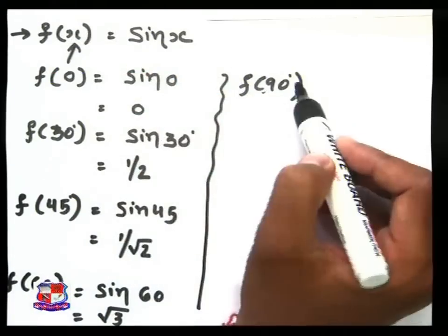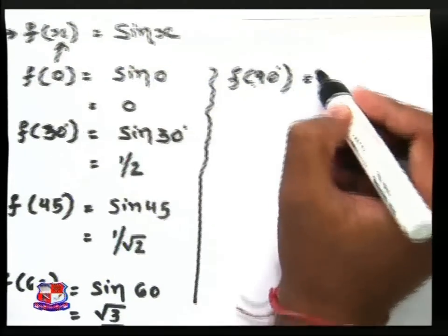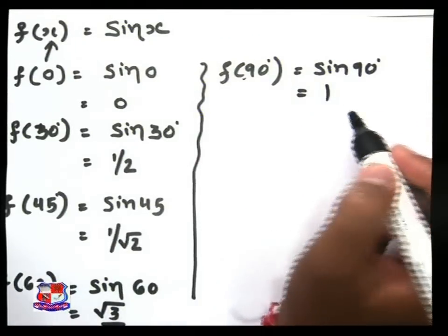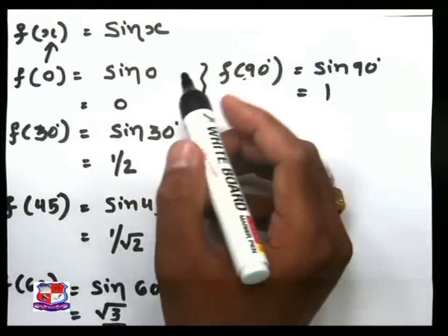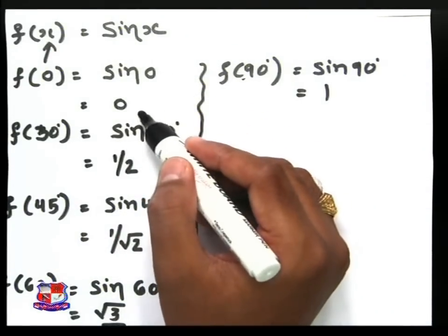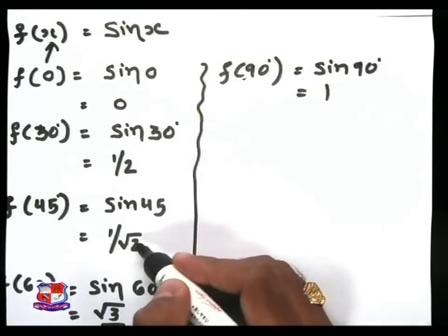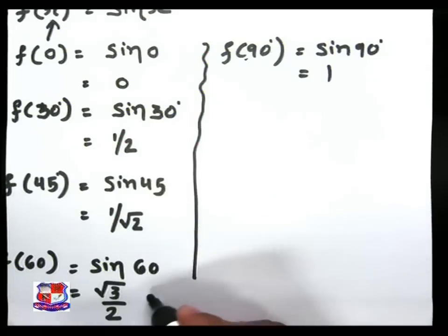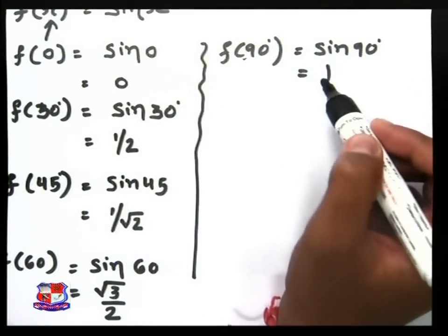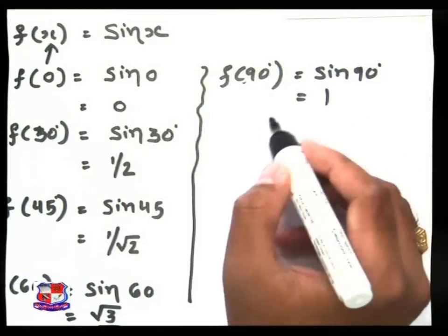Replace x by 90, so sin 90 degrees is equal to 1. In this way we can find instantaneous values of our sin waveform: at 0 it is 0, at 30 degrees it is 1/2, at 45 degrees it is 1/root 2, at 60 degrees it is root 3 by 2, and sin 90 is equal to 1. Suppose we want to plot a graph for this sin wave function.